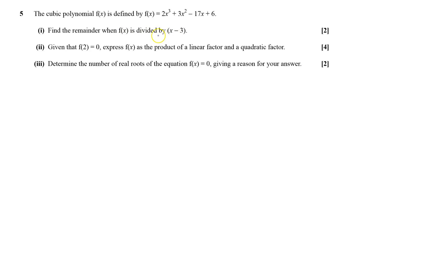To find the remainder when it's divided by that, all I have to do is work out what f(3) is. That equals 2 times 3 cubed plus 3 times 3 squared minus 17 times 3 plus 6, and that is 54 plus 27 minus 51 plus 6, which equals 36.